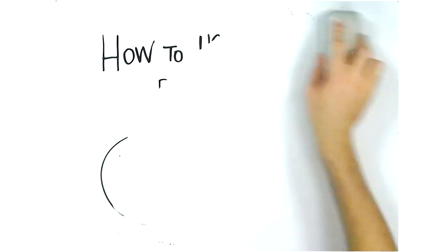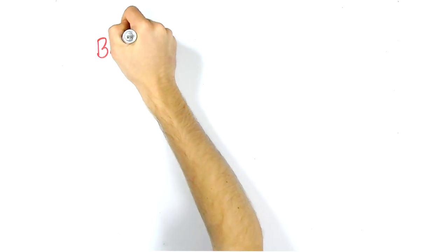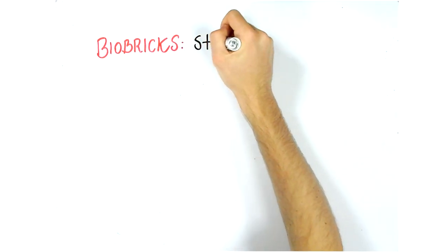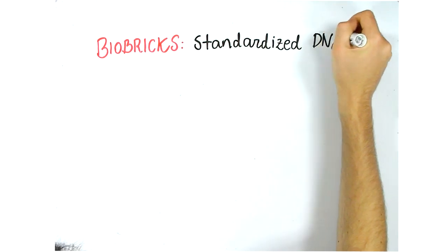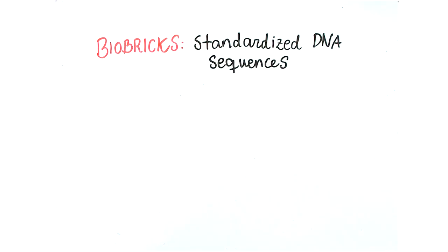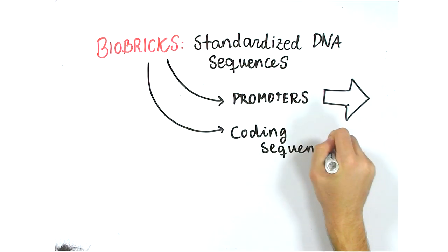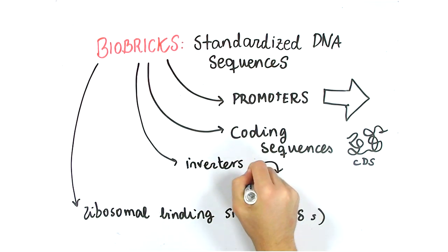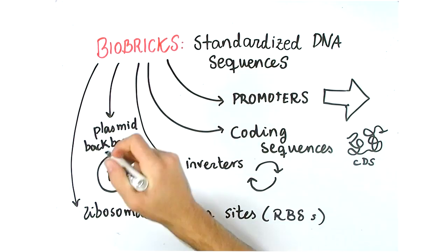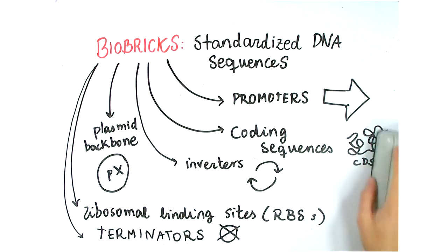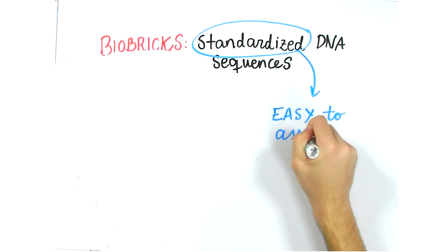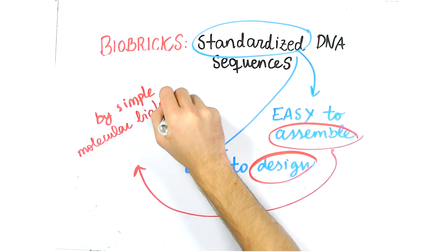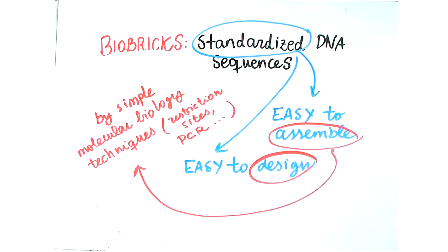Just as a reminder, biobrick parts are standardized DNA sequences that can be used to design synthetic biology circuits in organisms like E. coli. Different biobrick parts include promoters, coding sequences, ribosomal binding sites, inverters, plasmid backbones, and terminator sequences. We use them in synthetic biology because they are standardized and easy to assemble and reassemble using simple molecular biology techniques.